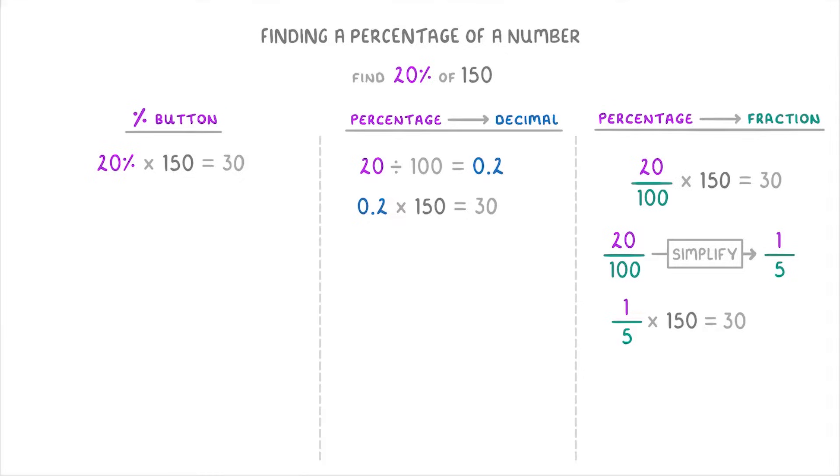Now the really important thing to understand here is that the reason we can convert a percentage into a decimal or a fraction before we multiply it by 150 is because 20%, 0.2, and 20 over 100 all mean exactly the same thing. They actually all have the same value. And so when we multiply any of them by 150, we're going to get the same answer.